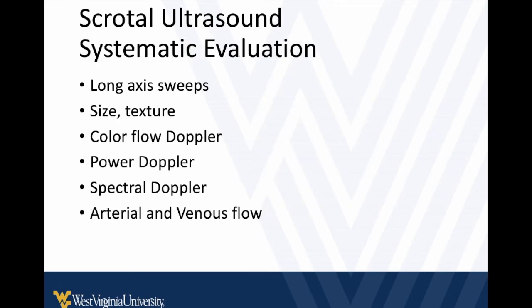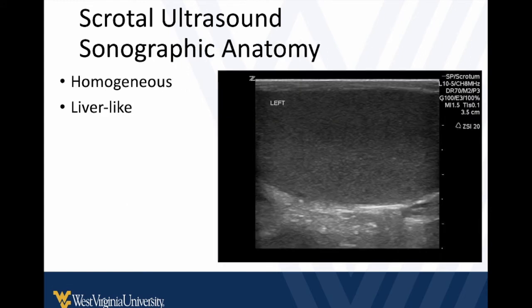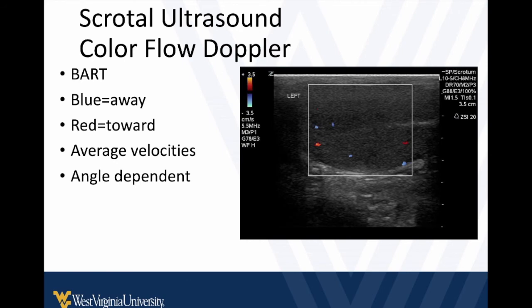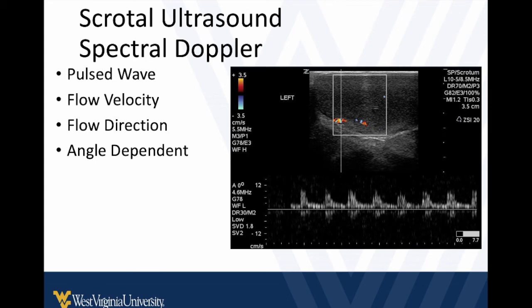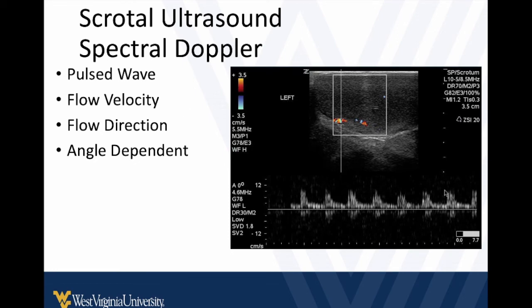We're going to do long axis views, look at size and texture, do Doppler, and look at flow patterns. Reminders: nice smooth borders, pretty homogeneous throughout the entire testicle. When we see flow, the colors don't matter that much since flow moves throughout the testicle rather than toward or away from us. Pay attention to the scale and color gain — if the scale is set to 20, you won't pick up any flow. Power Doppler is more sensitive but has more artifact. We then want to get pulse wave images and get a tracing — arterial spikes and a flat venous waveform. Ideally, identify both an arterial and a venous waveform in the testicle of interest when torsion is a concern.